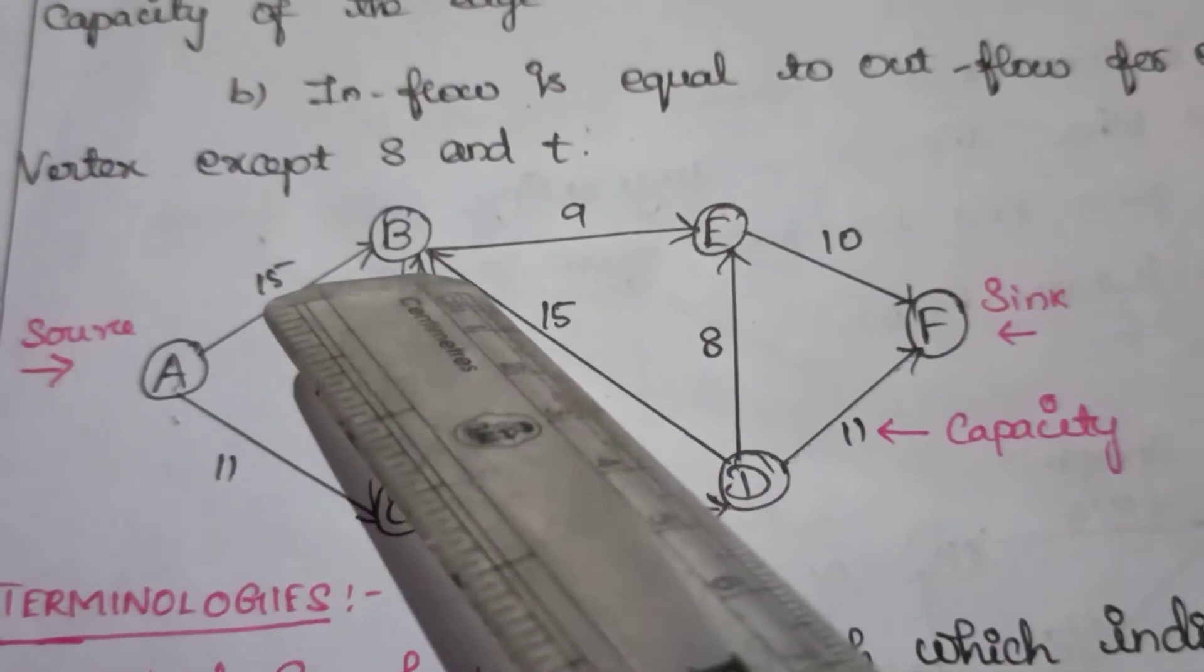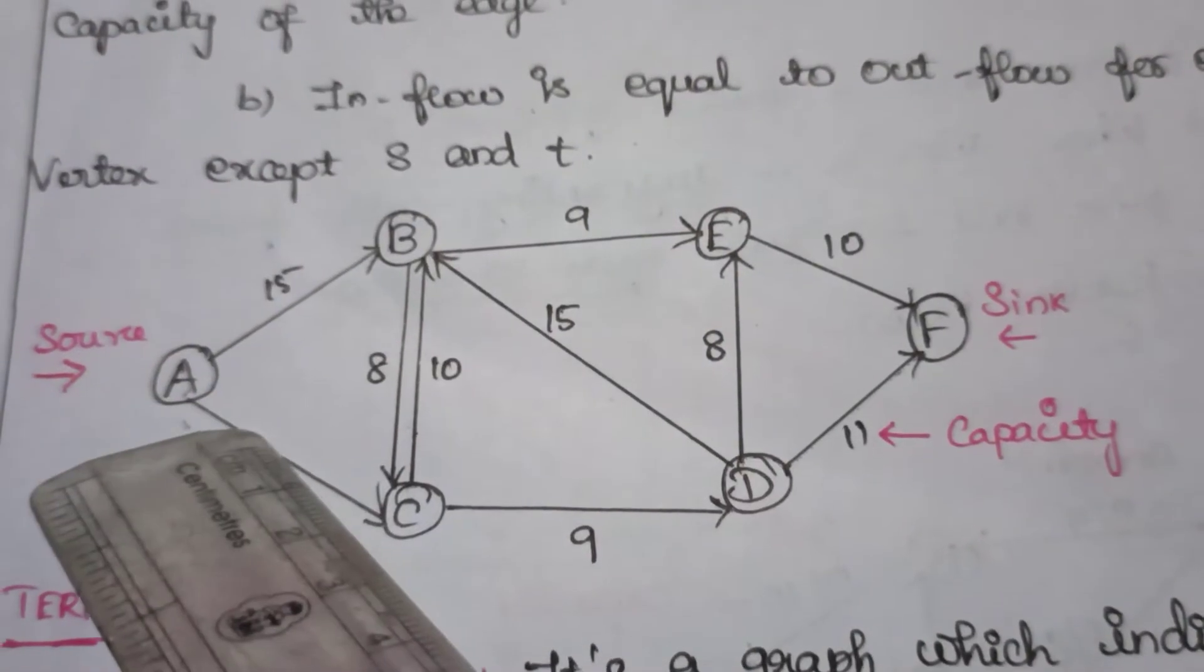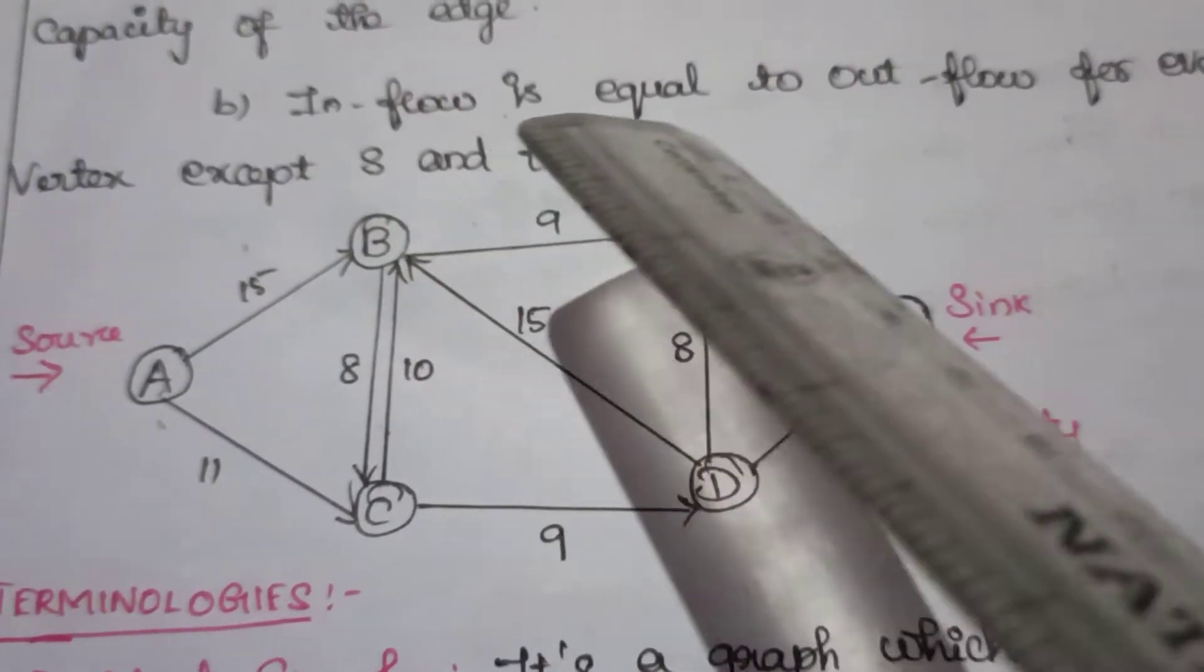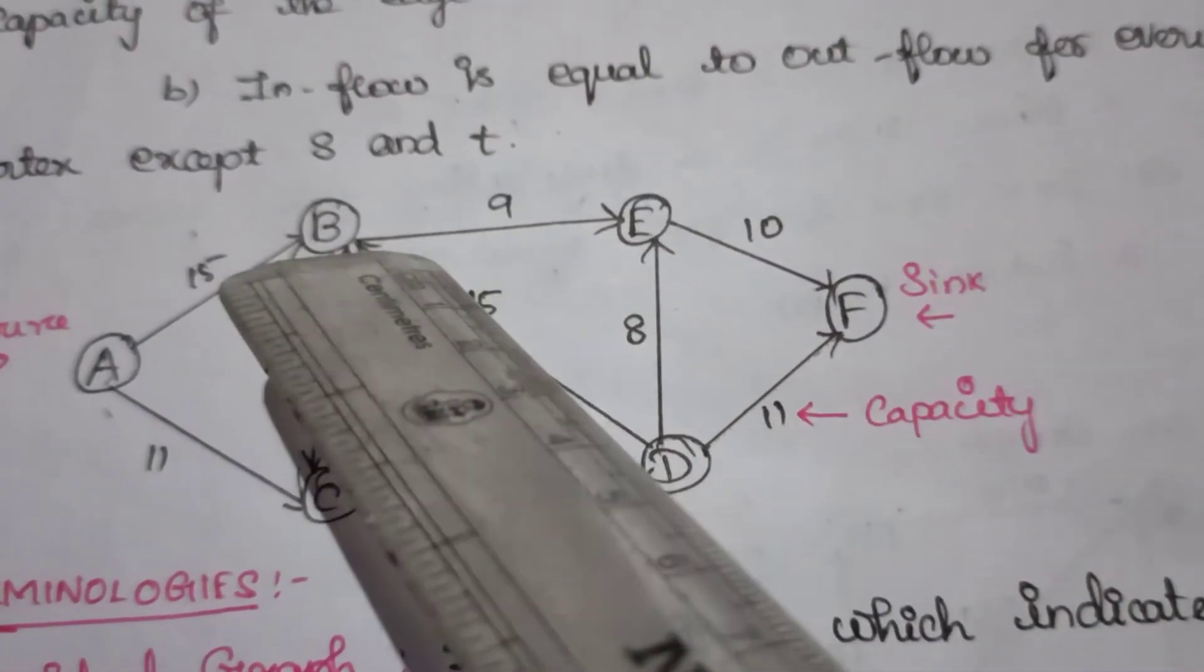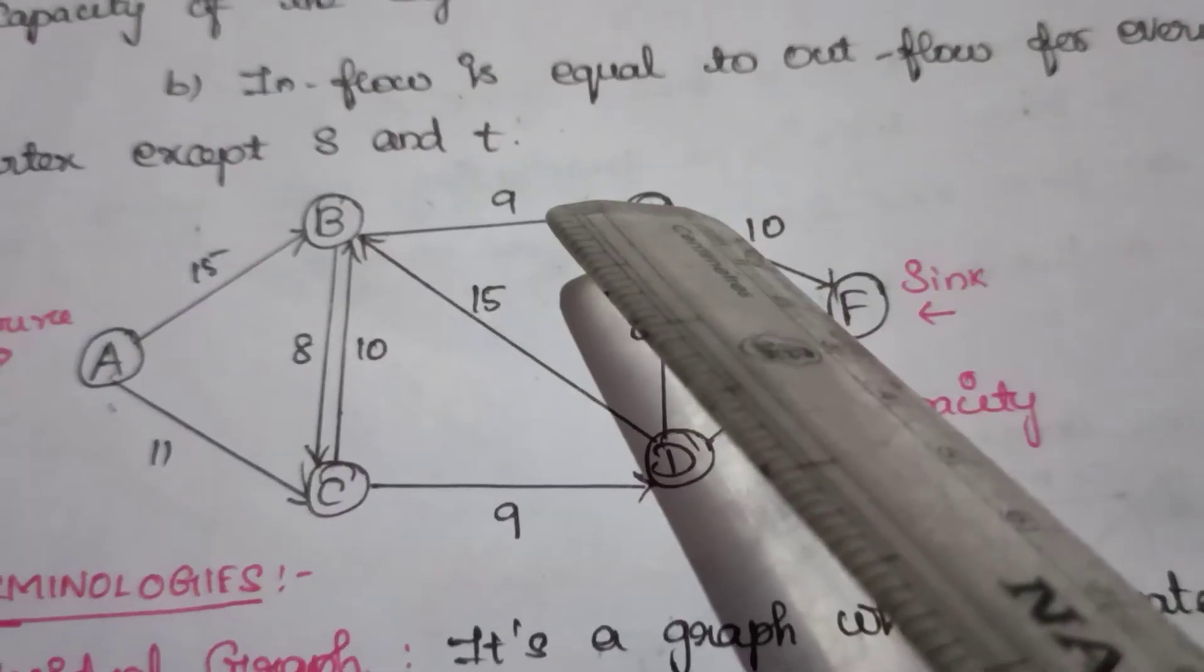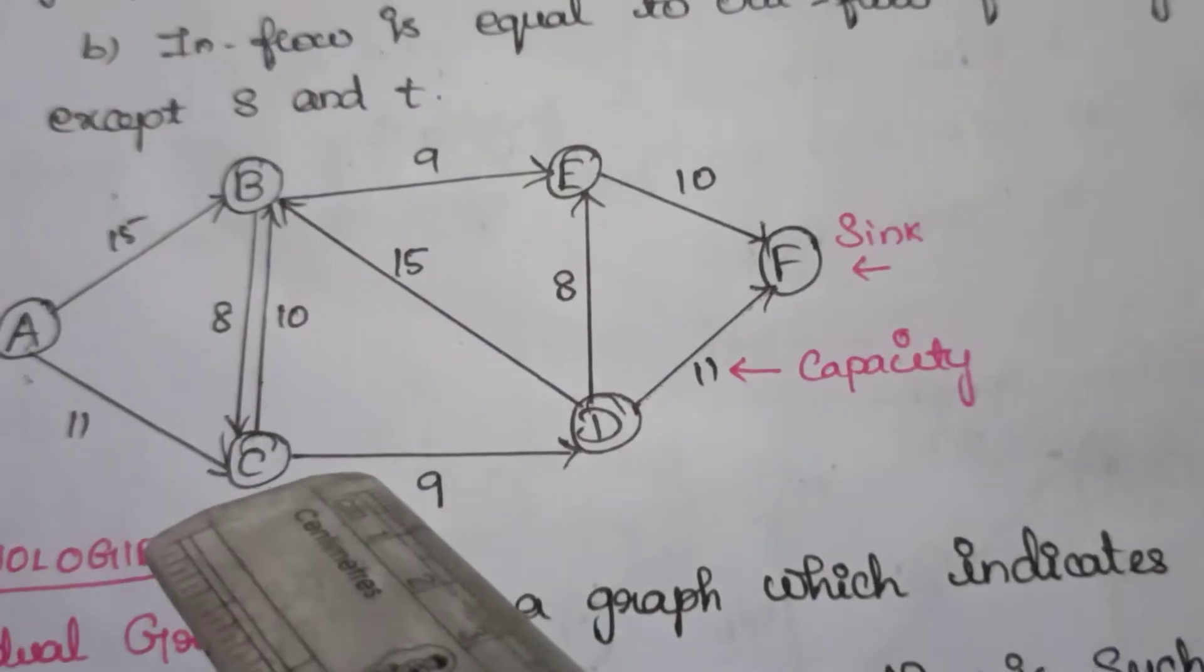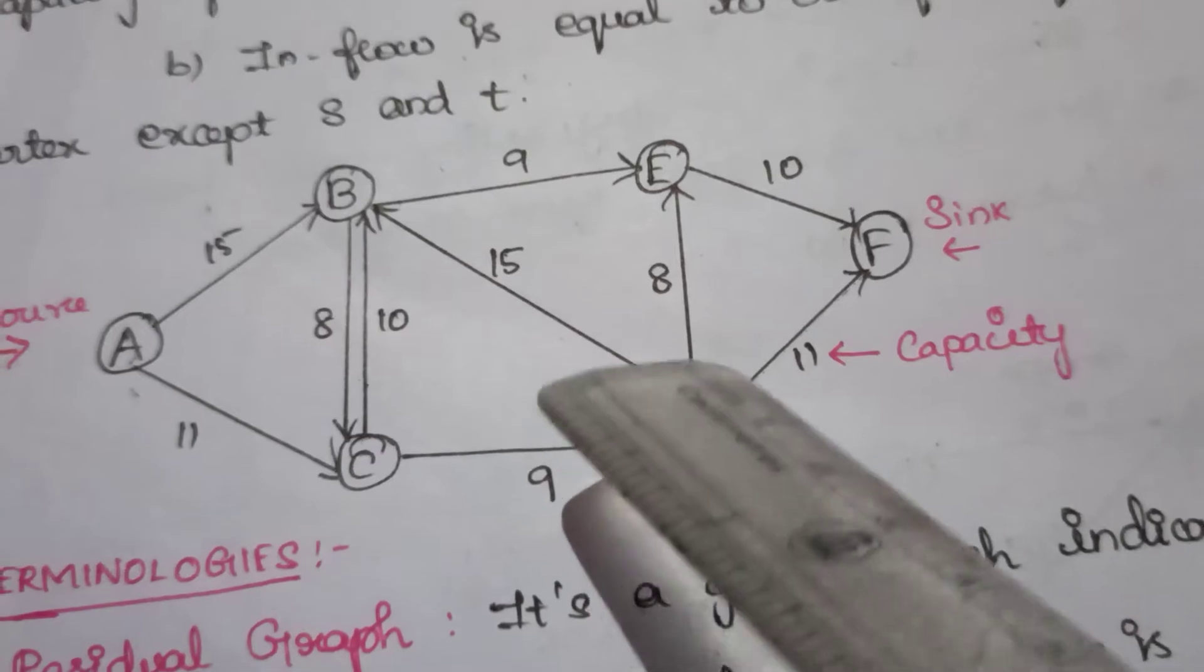Inflow is, for vertex B, the inflow is from vertex A, and for vertex E, the inflow is from vertex B. The outflow for vertex C is to D.